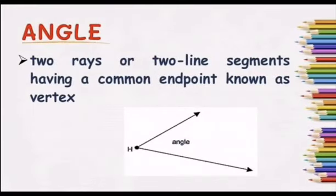Then, the last one is an angle. It has two rays or two line segments having a common endpoint known as vertex.